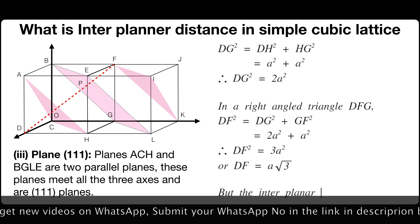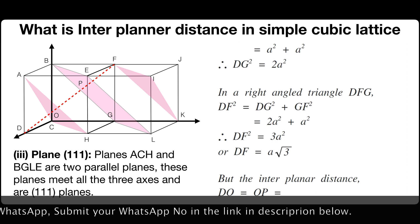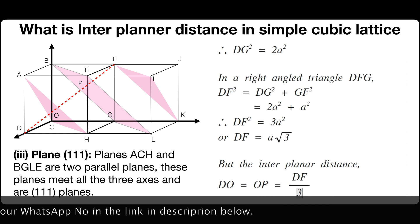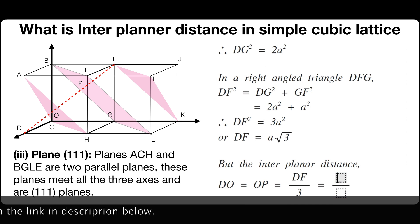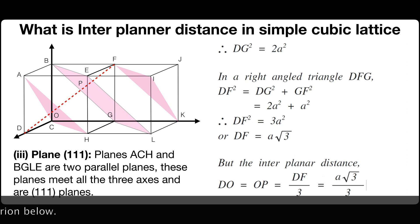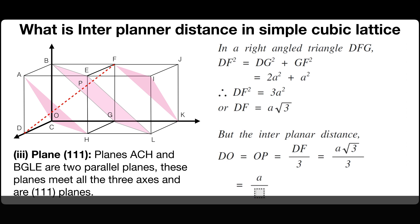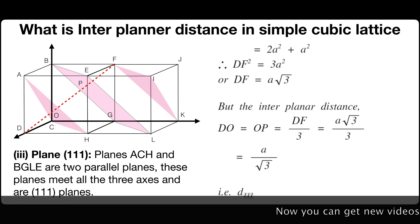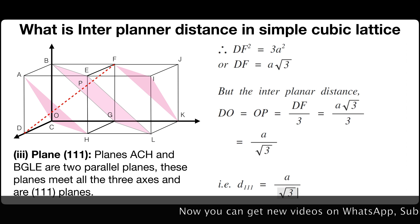But the interplanar distance OD is equals to OP is equals to DF by 3 which is equals to A square root of 3 divided by 3. Therefore, it comes A by square root of 3. Therefore, distance D111 is equals to A by square root of 3.